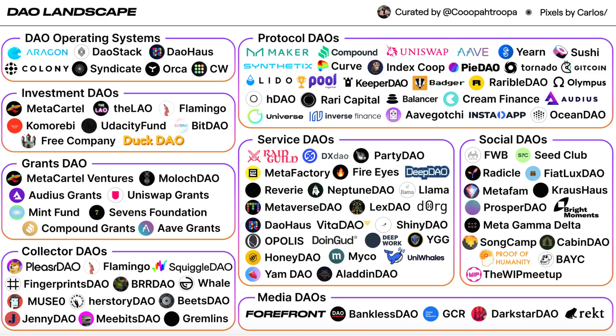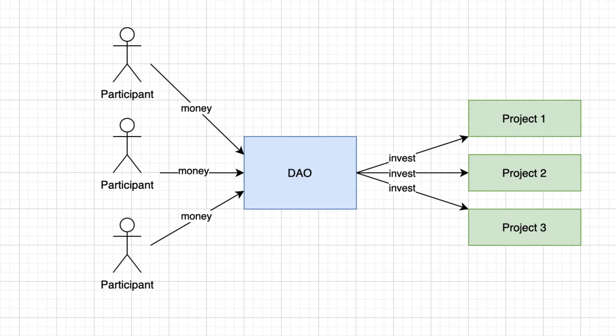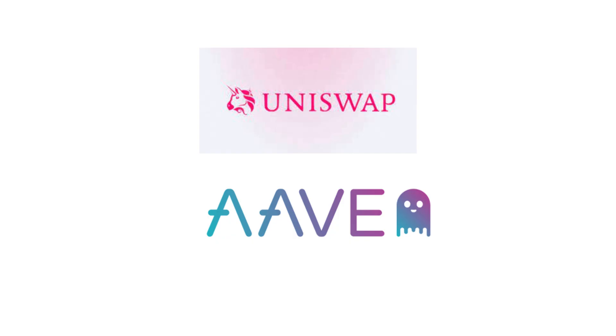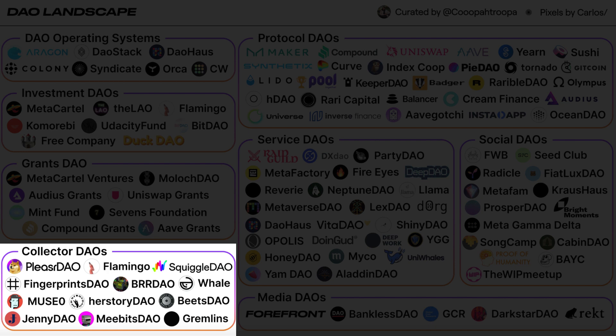The next type of DAO is investment DAOs. For example, we have the MetaCartel DAO. In an investment DAO, participants pool their money together in a smart contract and vote on where to invest the money. We also have Grant DAOs, which are used by blockchain projects to support their ecosystem — for example, the Uniswap Grant DAO and the Aave Grant DAO. We also have Collector DAOs, which are focused on collecting NFTs — for example, PleasrDAO and Flamingo.